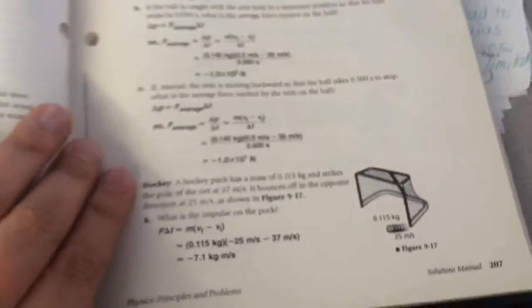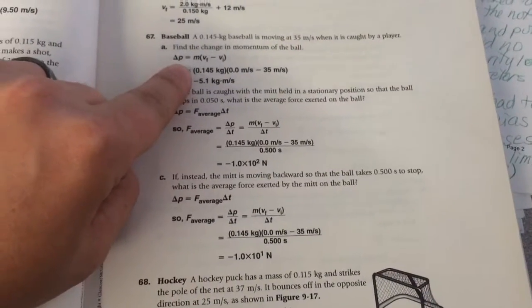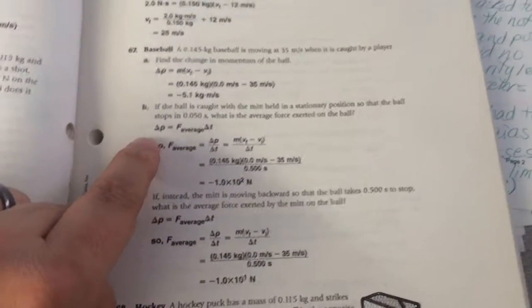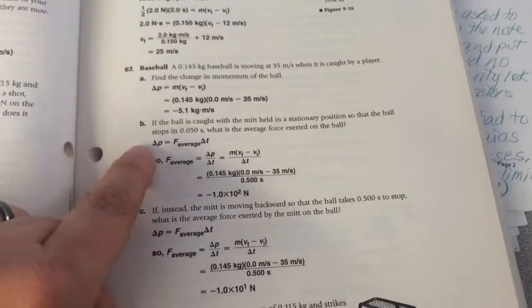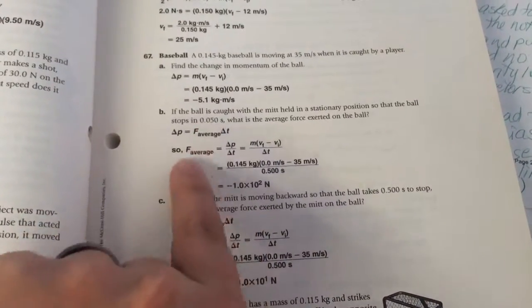And then the last one I gave you was 67, it's a big one, baseball problem with three parts. So change in momentum, mass times V final minus V initial, to find the change in momentum for this short time period, here you go.